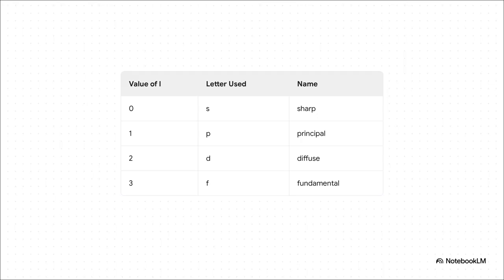Fun fact, these names actually come from the way early scientists described the lines they saw in atomic spectra. Sharp, principal, diffuse, and fundamental. Pretty cool, huh?